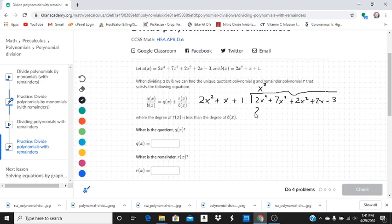So we do x squared times 2x squared, that's 2x to the 4th. Then we do x times x squared, so that's plus x cubed. And then x squared times 1 is plus x squared.